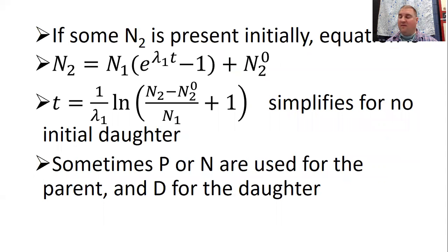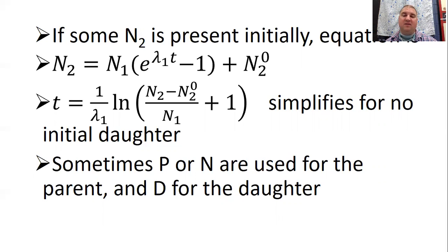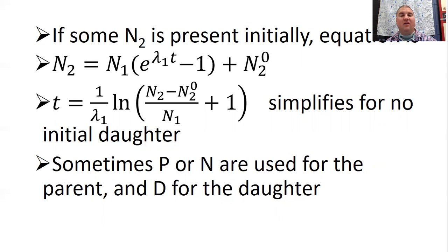For anything radioactive we can figure out what the decay constants are and how much should remain after a specific time. These equations change a little if there's some daughter present initially—for example, if uranium decays into lead and there's some lead already present, we can modify the equation based on that initial amount. We can solve those equations to solve for time, meaning we're solving for the age of the material. Sometimes we use N for parent and D for daughter instead of N1 and N2.